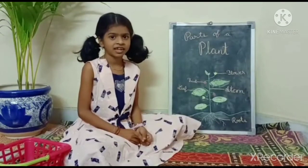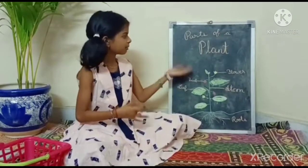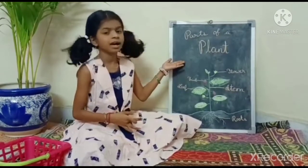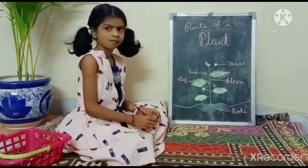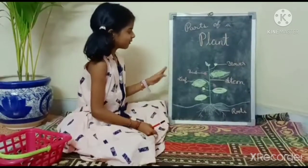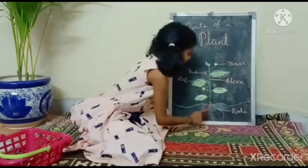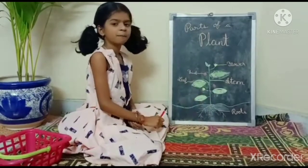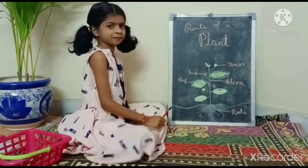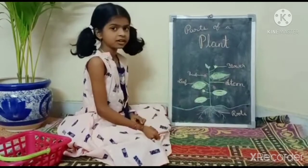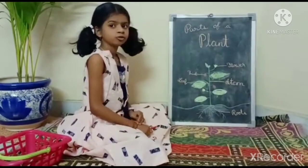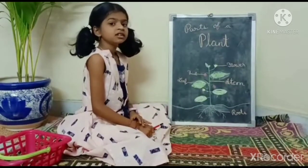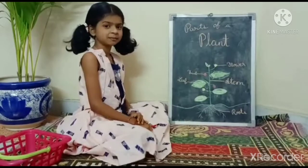Before I explain about leaves, you will need to know about the parts of a plant. There are two parts of a plant: number one, the root system, and number two, the shoot system.